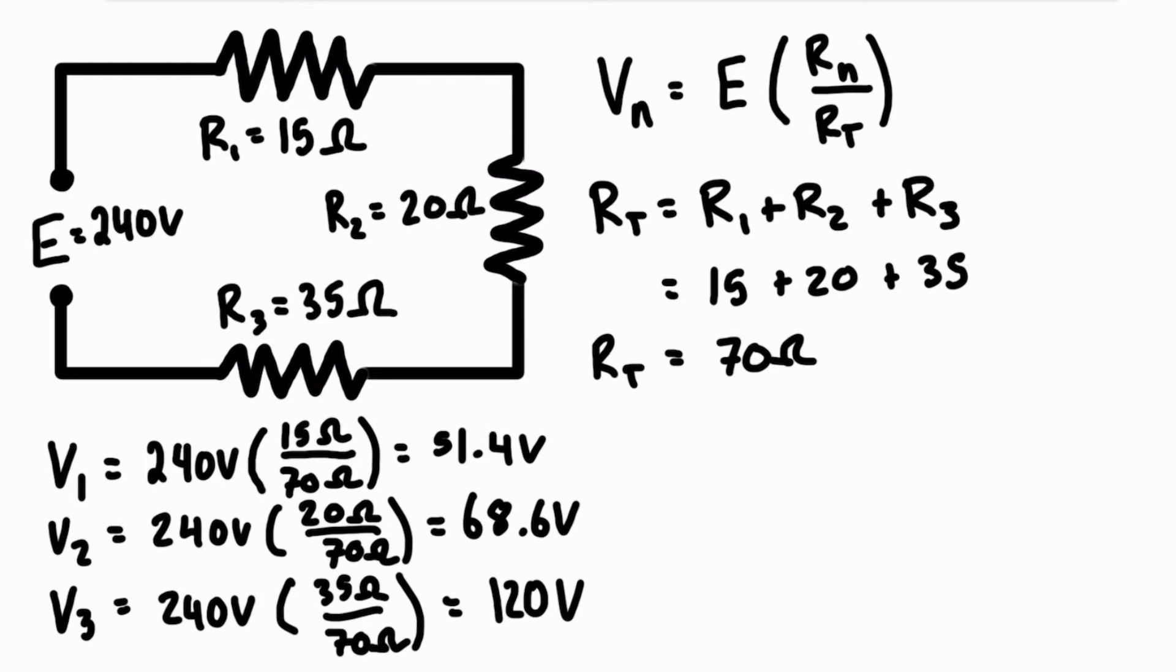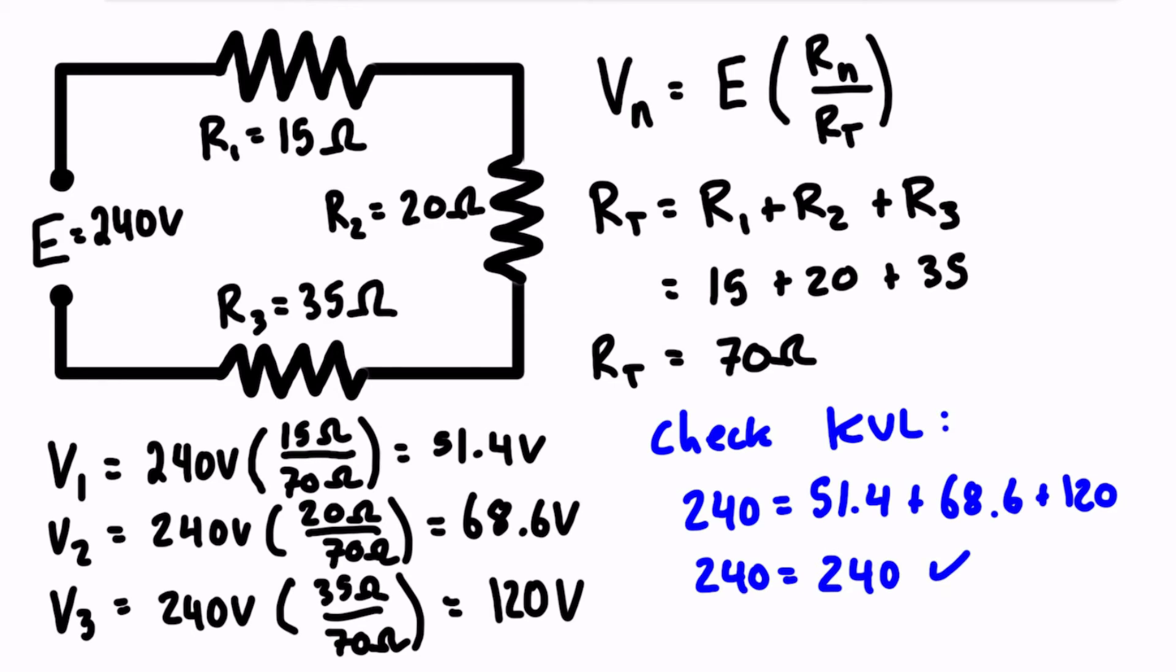We do want to just double check that these numbers are correct. So we want to check our Kirchhoff's voltage law, KVL. And so that's just going to say that the sum of voltage drops around the circuit is equal to zero. So we have 240 is our source voltage, and then the other independent voltage drops are 51.4 plus 68.6 plus 120. And if you calculate that out, we're just going to see that 240 equals 240. So KVL is satisfied.